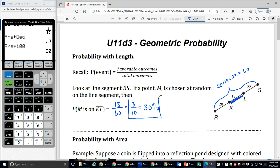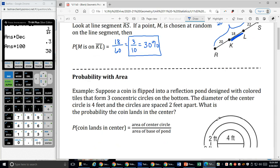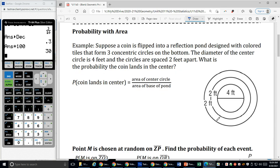Three tenths or 30% of the time, so almost a third of the time, I'm going to land on KL if I'm randomly choosing a point on the segment. Let's look at probability with area.